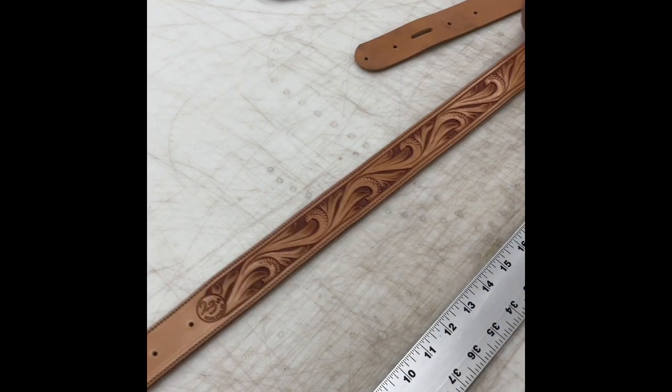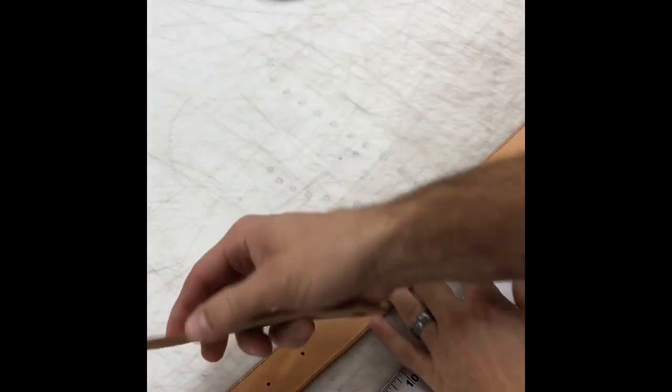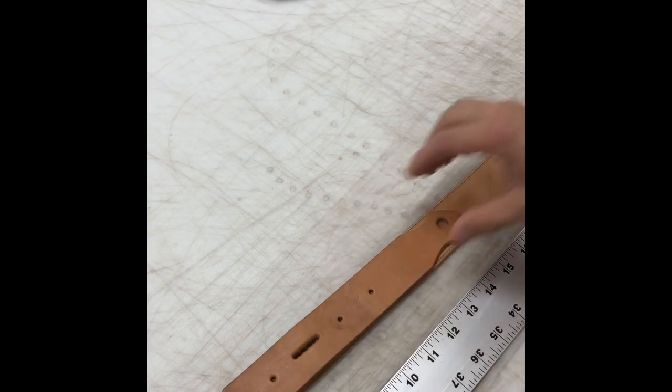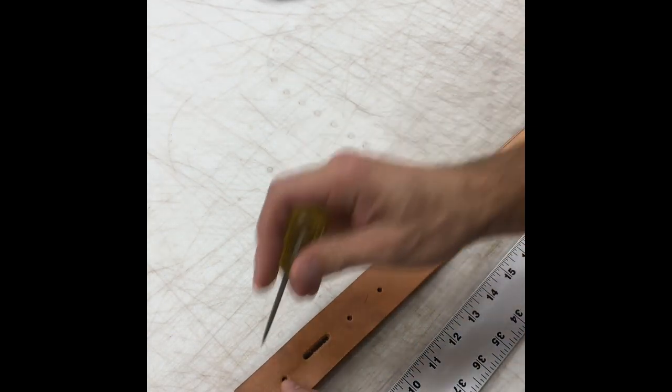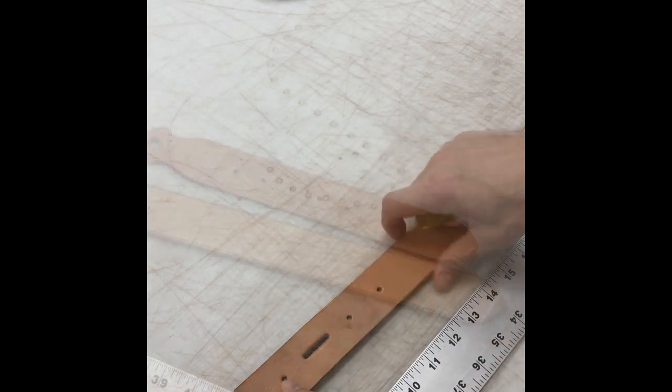We're going to mark holes on the back of the belt. Our snap's an oblong hole. I can push that jig all the way to the end, mark my holes.